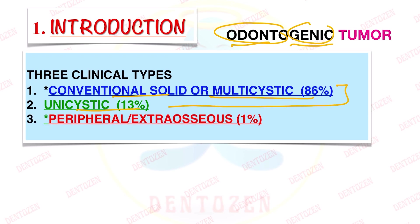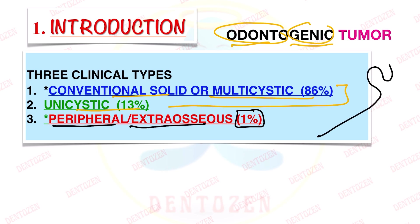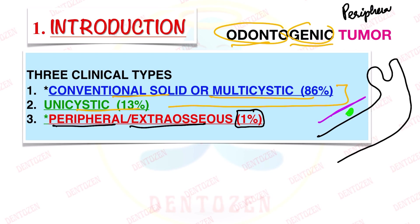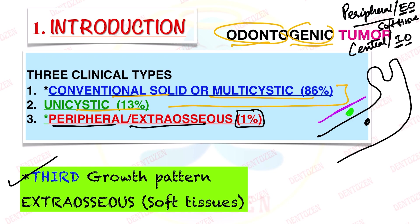In this video, we are going to talk about the peripheral type or extraosseous type, which constitutes about 1% of all ameloblastomas. Peripheral means outside — so this tumor forms in the gingiva, in the soft tissues outside the bone. Wherever you see the word 'central' along with a lesion, that means it is intraosseous, inside the bone. So here is your viva question: what is the other name for peripheral ameloblastoma? It is also known as extraosseous ameloblastoma.